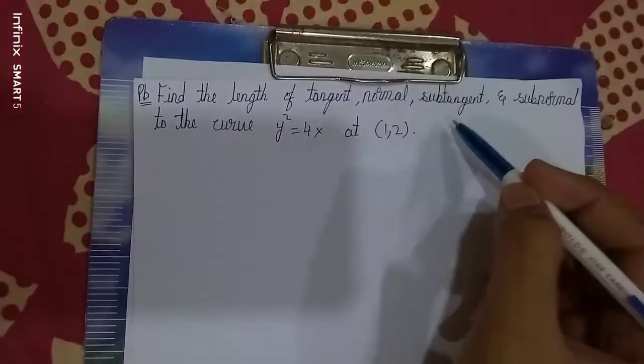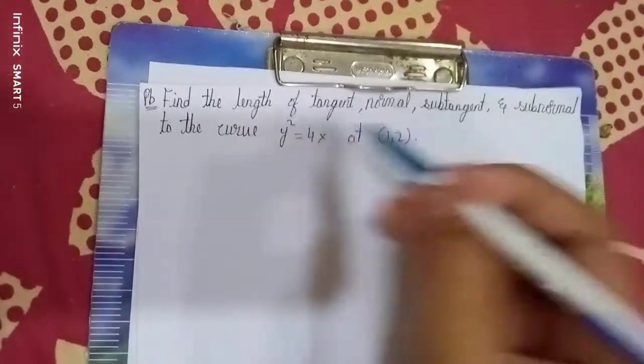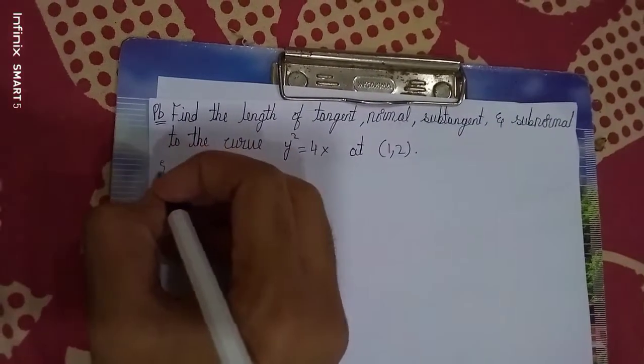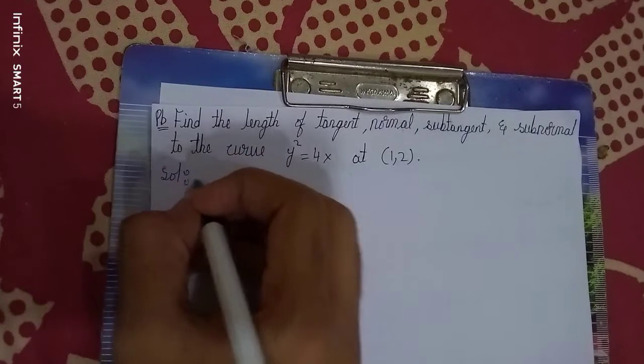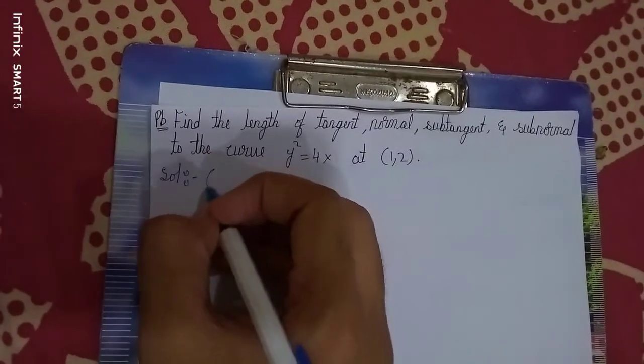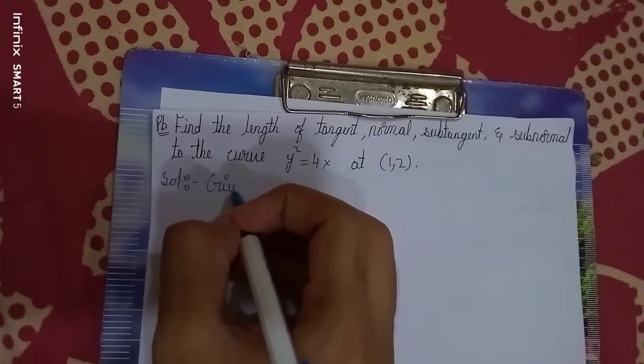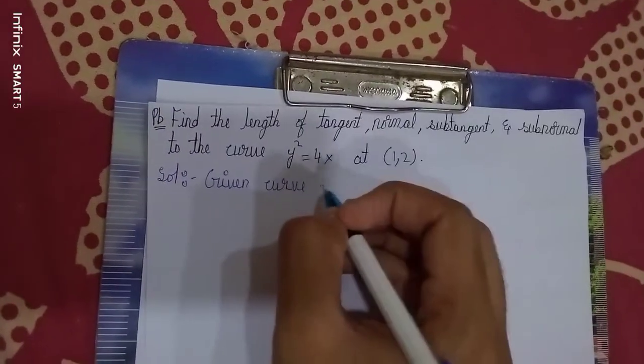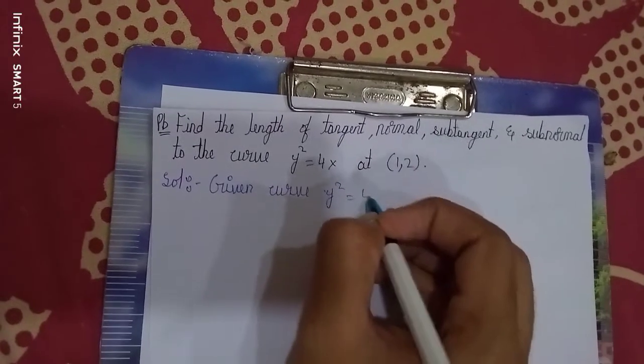Find the length of tangent, normal, subtangent and subnormal to the curve y² = 4x at (1,2). First question is given. So we have to write, given curve y² = 4x.